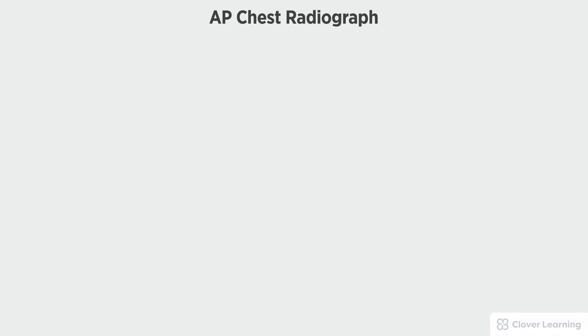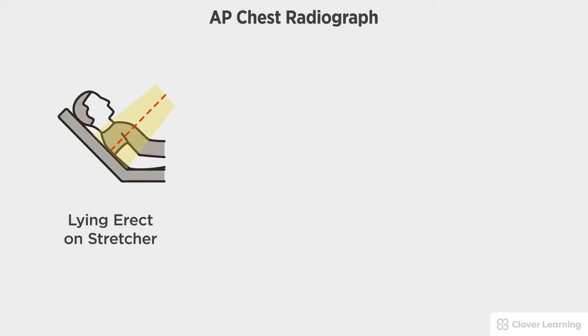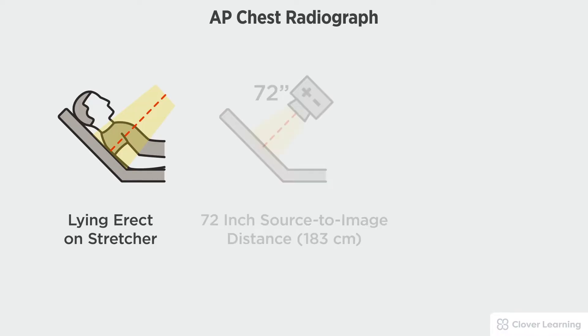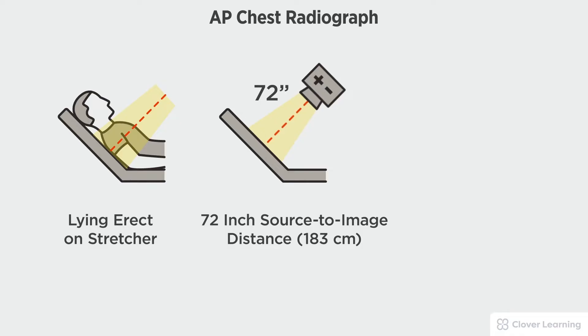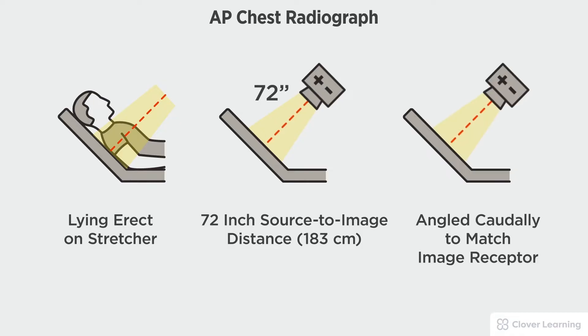In this view, we will be demonstrating an AP chest with the patient semi-erect on a stretcher or a hospital bed. The head of the stretcher should be adjusted to place the patient's chest as erect as possible, with a 72-inch source to image distance and the tube angled caudally to match the angle of the image receptor.